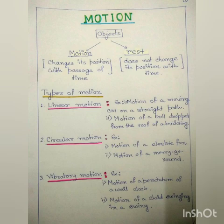What is circular motion? If a body moves around a fixed point, then it is in circular motion. Examples are the motion of an electric fan, the motion of a merry-go-round, etc.